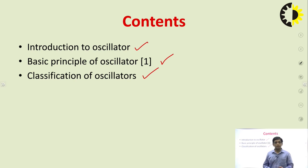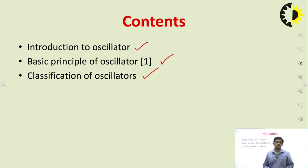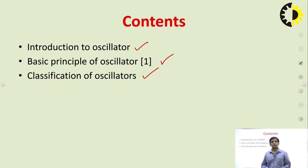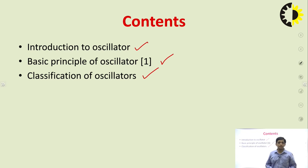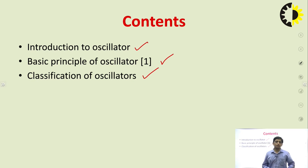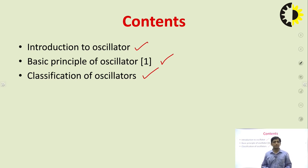An oscillator is an electronic device which is used to generate a signal of a particular frequency. For example, it can generate a sine wave, a square wave, or a triangular wave. Like in the laboratory, you have seen the function generator — with the help of that function generator you can generate sine, square, and triangular waves of a particular frequency. That function generator is basically an oscillator.